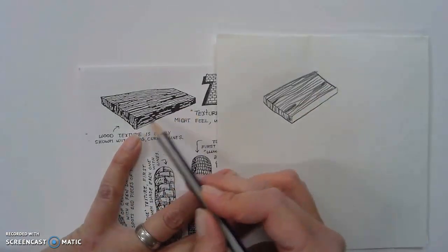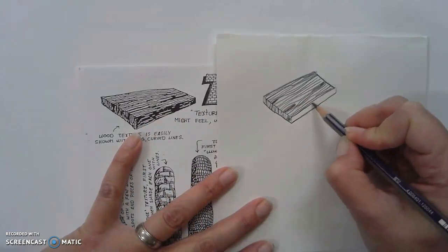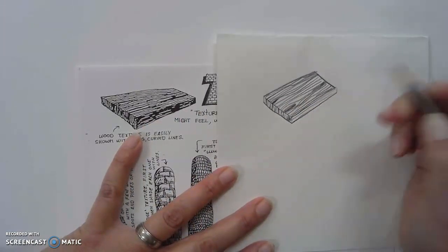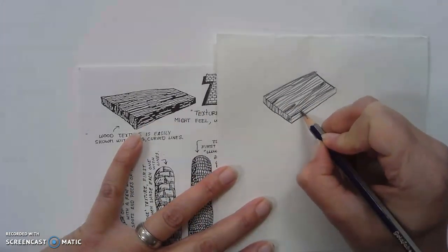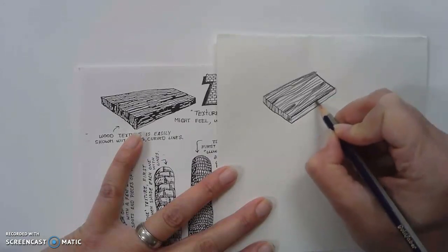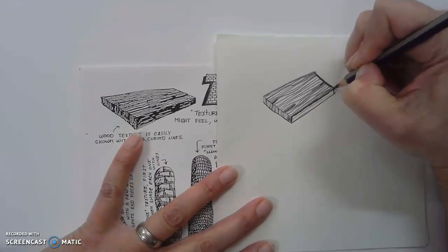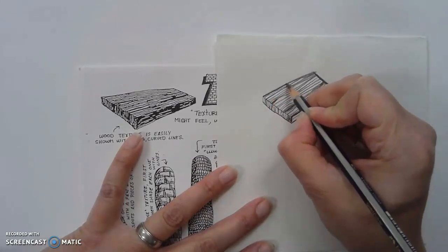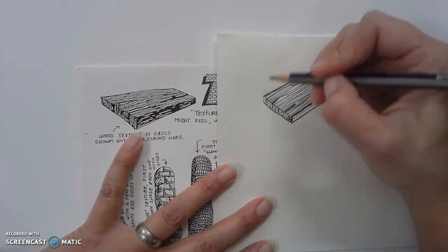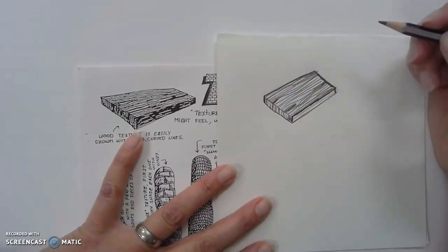And then this wood grain is also going to be going the same direction. So I think I'll maybe darken up those lines there so they don't get lost and so that you can see them online. So there we go.